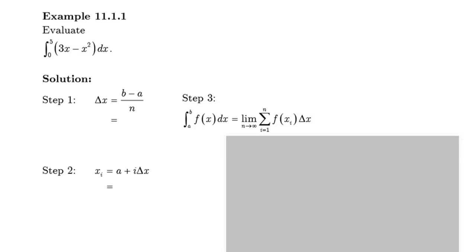So step one, we're going to figure out delta x, which is going to be equal to the difference of the limits divided by the number of rectangles, which is going to be allowed to move towards infinity. But simply put, this is just going to be 5 minus 0 over n, which equals 5 over n.